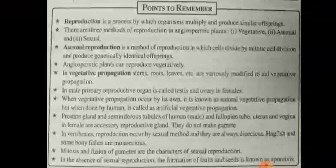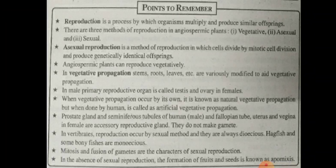Reproduction in plants: first, vegetative propagation; second, asexual; and third, sexual reproduction. Asexual reproduction is a method of reproduction in which cells divide by meiotic cell division and produce genetically identical offspring.